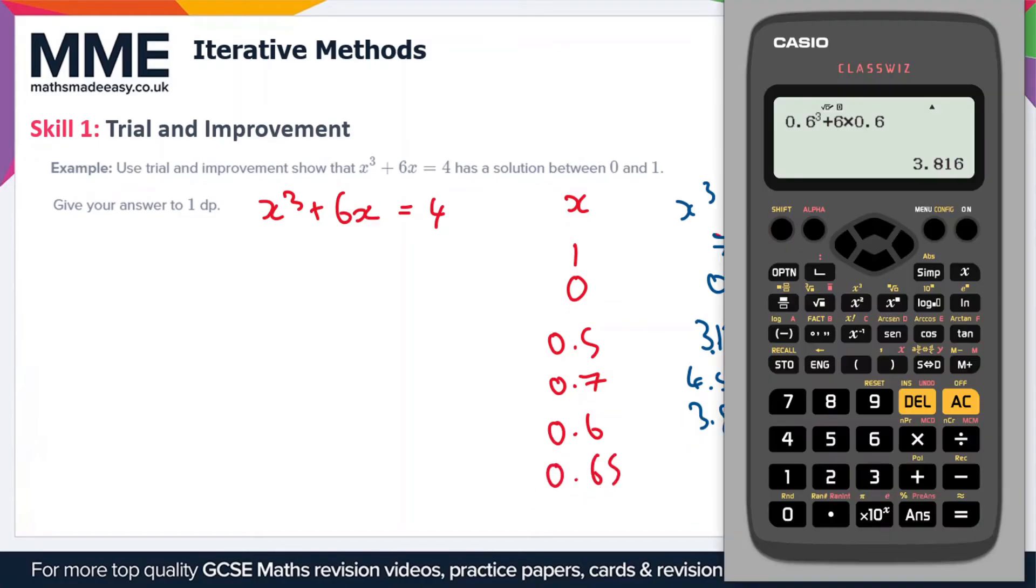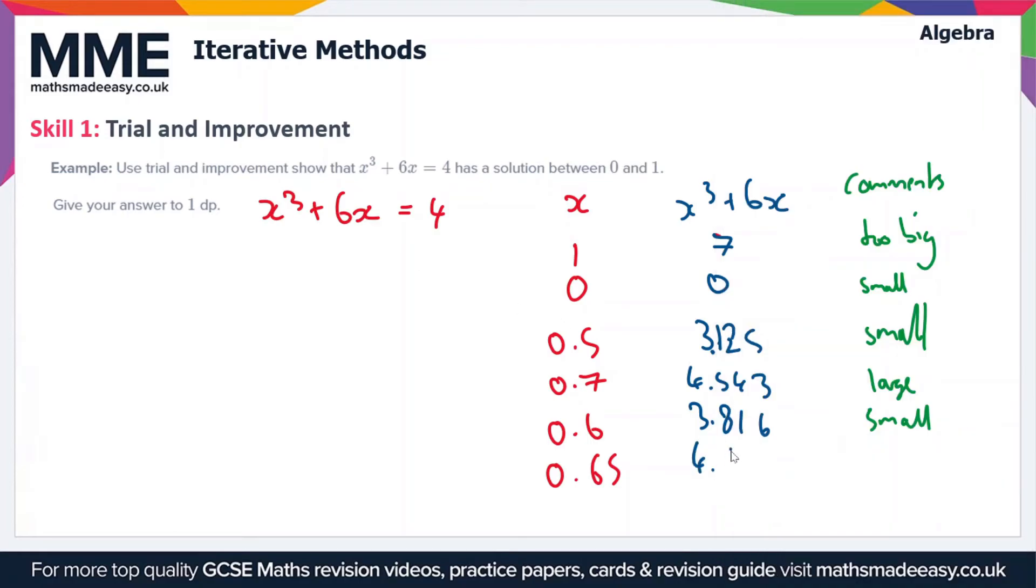So we're just going to replace 0.6 with 0.65 in this calculator here. So we're going to get a value of 4.174625, or 4.175. So 4.175, and what's the comment here? Well, this is going to be too big.